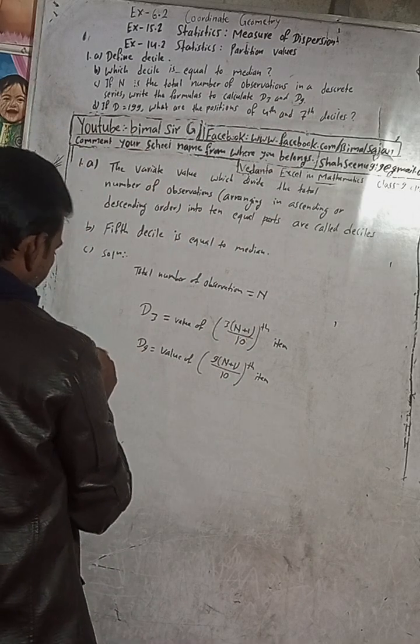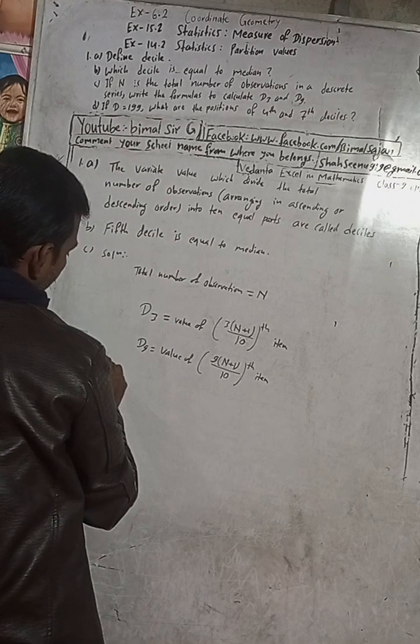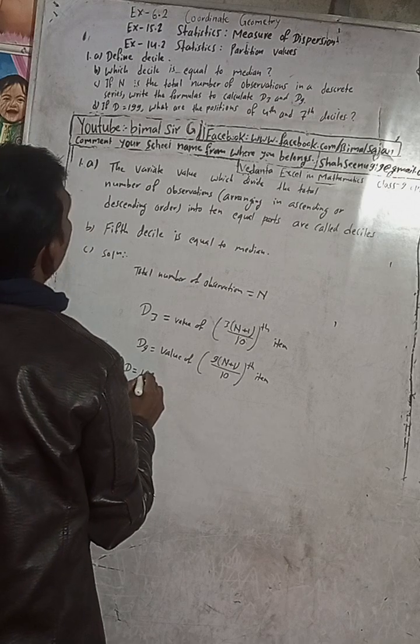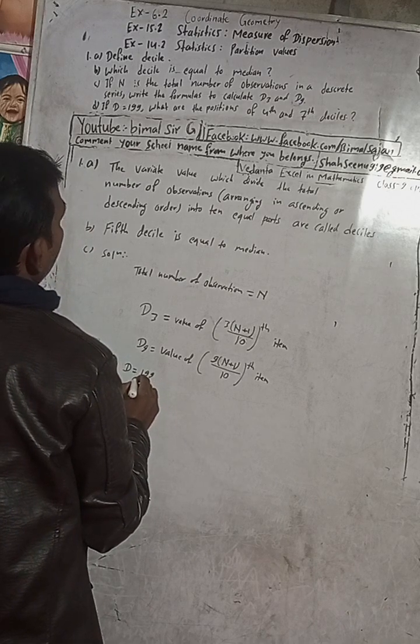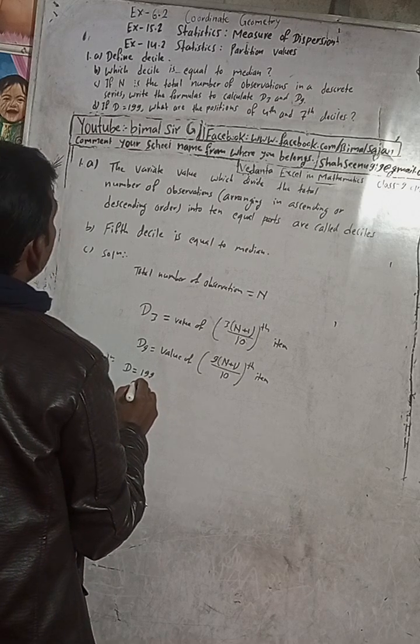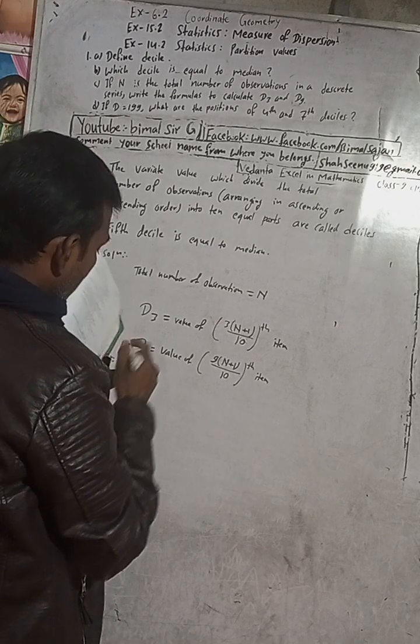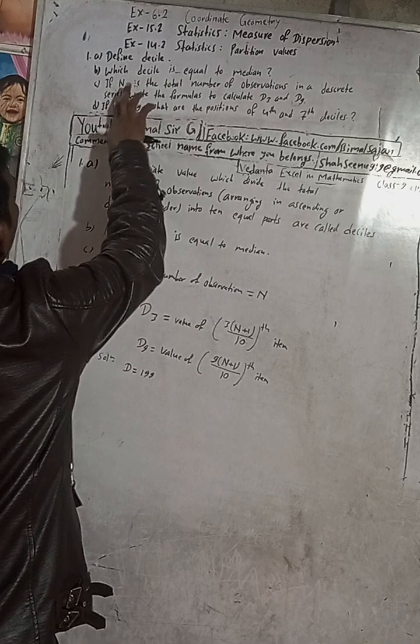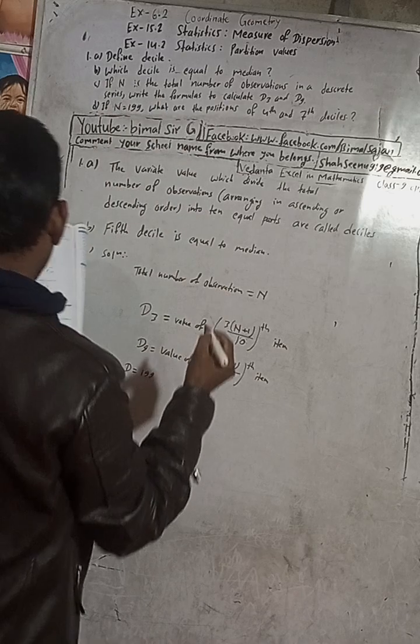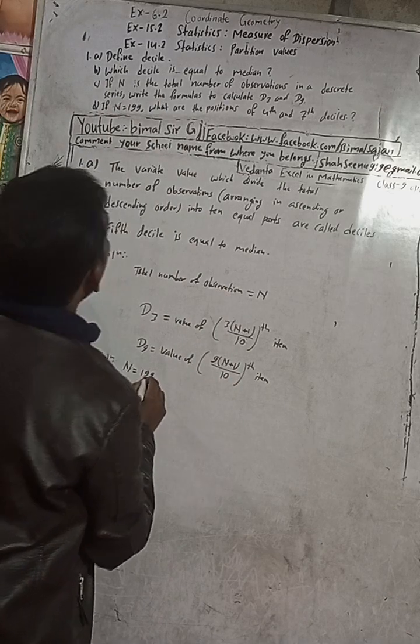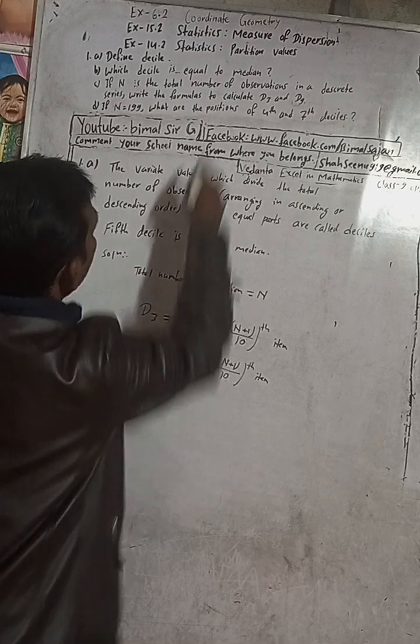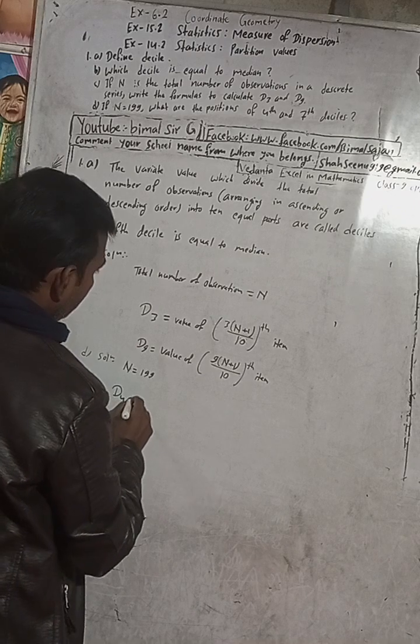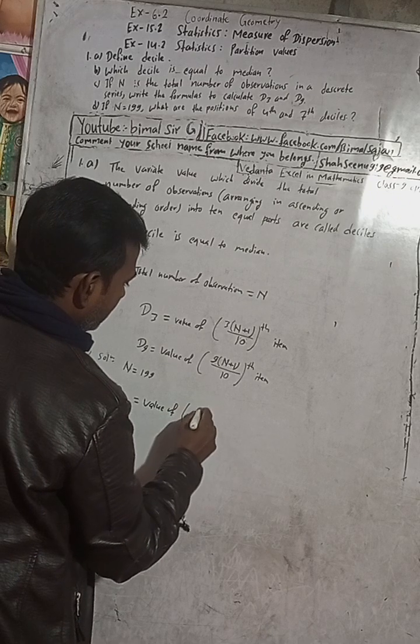Now D number question is: if N is equal to 199, if N is equal to 199, what are the positions of 4th and 7th deciles? So question is here, let me confirm the question now. If N is equal to 199, now if N is 199, then what are the positions of fourth and seventh deciles? Support me, show D4, for second D7.